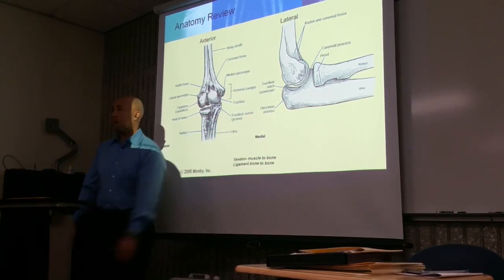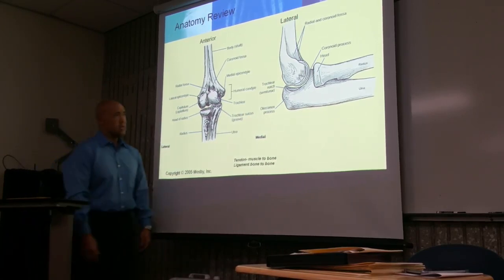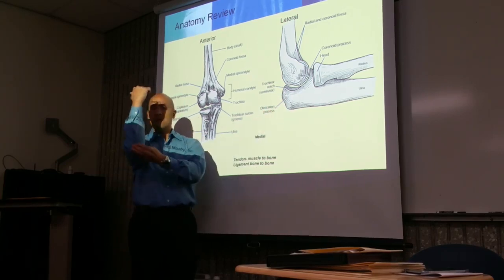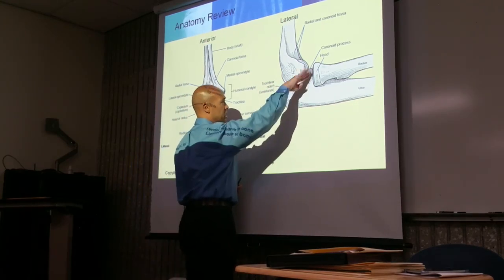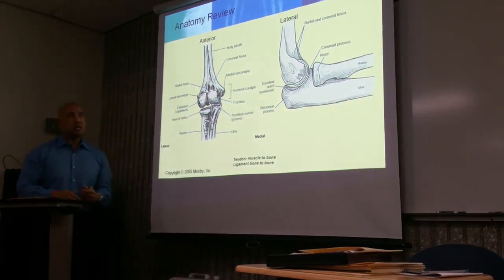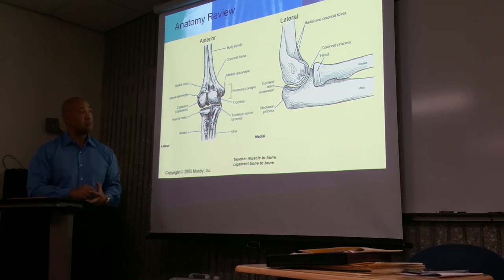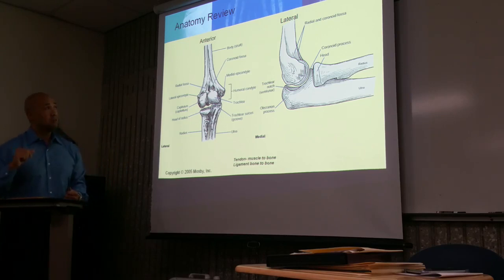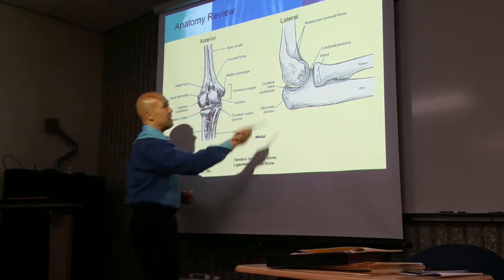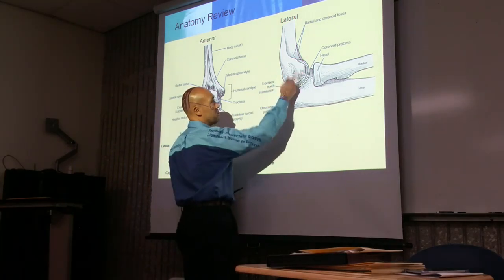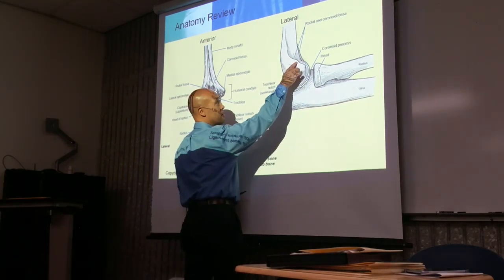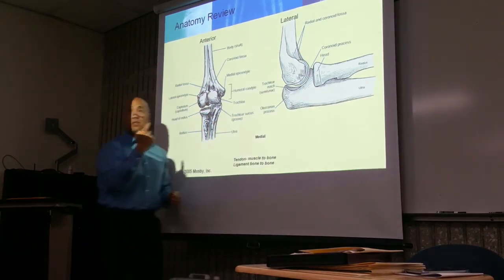Here we have the lateral elbow. We know the olecranon process and the coronoid process. We have a curvature here which is a notch — this notch is known as the trochlear notch, also called the semi-lunar notch; they are used interchangeably. When you bend your elbow, the head sits in the radial fossa and the coronoid process sits in the coronoid fossa.